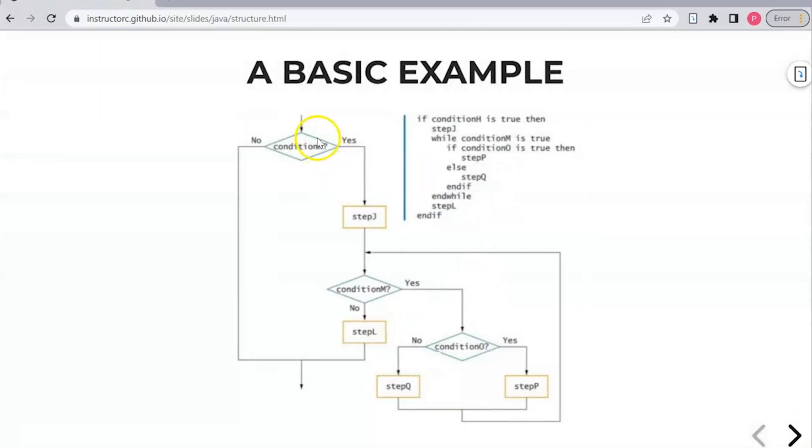So here's an example of what that looks like. This is what we call a single alternative. So we have a condition and this is also the pseudocode on the right here where my mouse is hovering. So condition H is true, yes. If you can say yes to that condition, do step J. Then we have, so here we have single alternative. We have sequence, which is step J, and then here we have a looping structure. So condition M is true, yes.